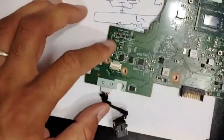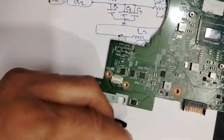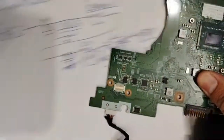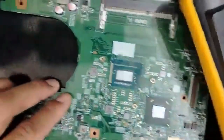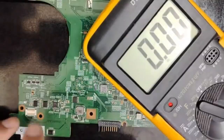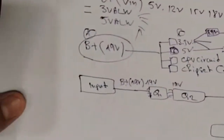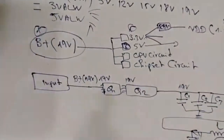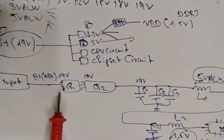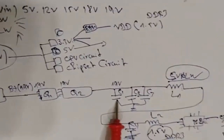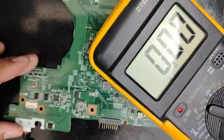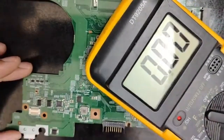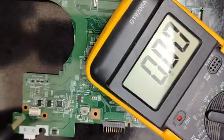Let's apply this circuit on the motherboard. The adapter is inserted, we have the multimeter set to 20 volts. We have the two switches here — the input B-plus and the voltage will be applied to the first MOSFET, to the second MOSFET, and then to the three ceramic capacitors. The black probe goes to ground.